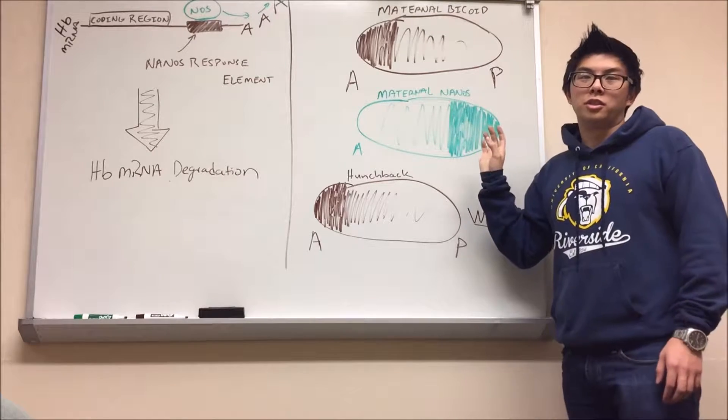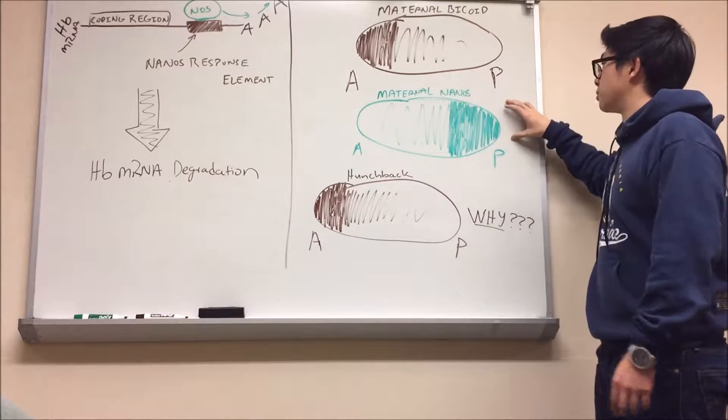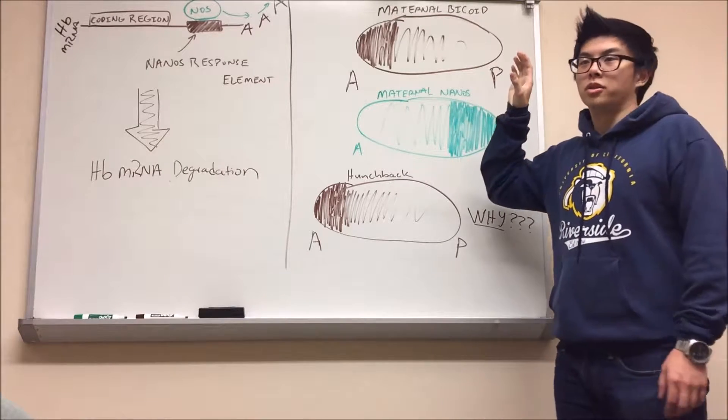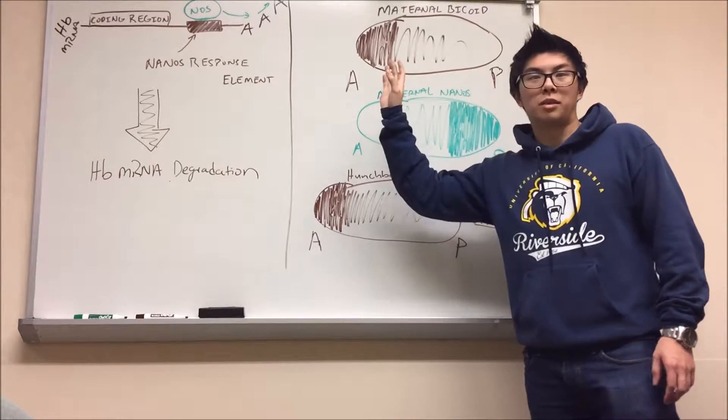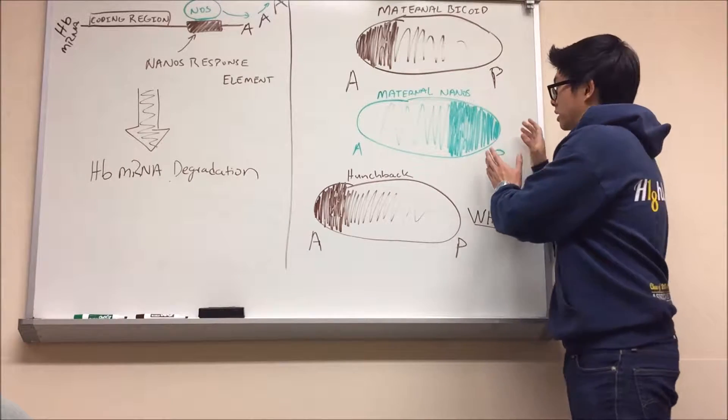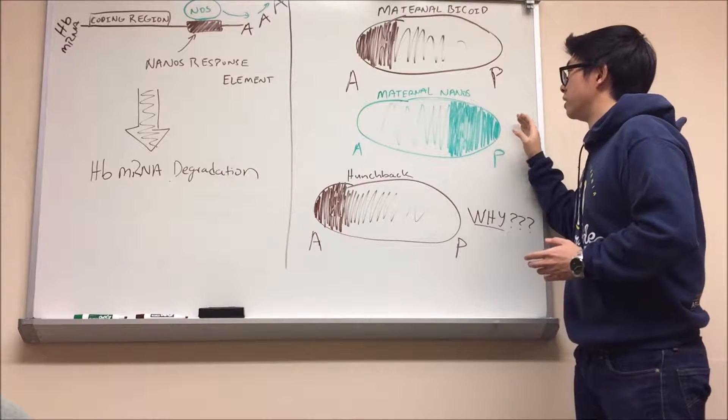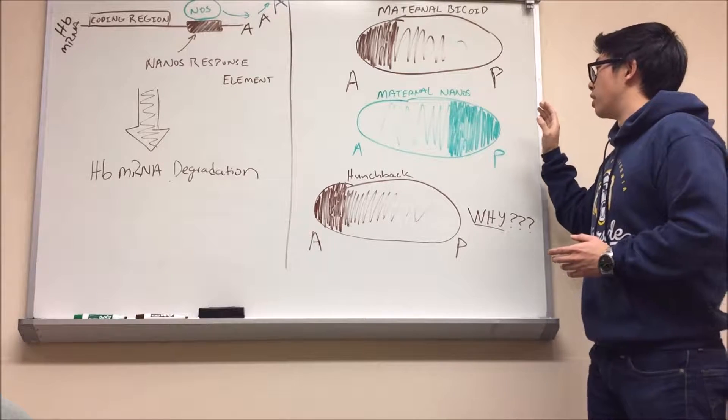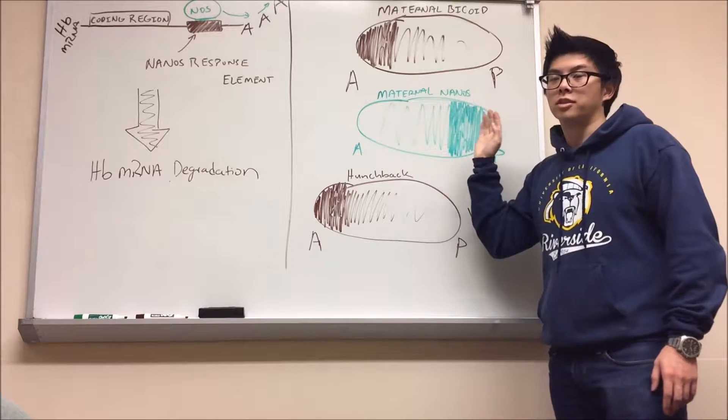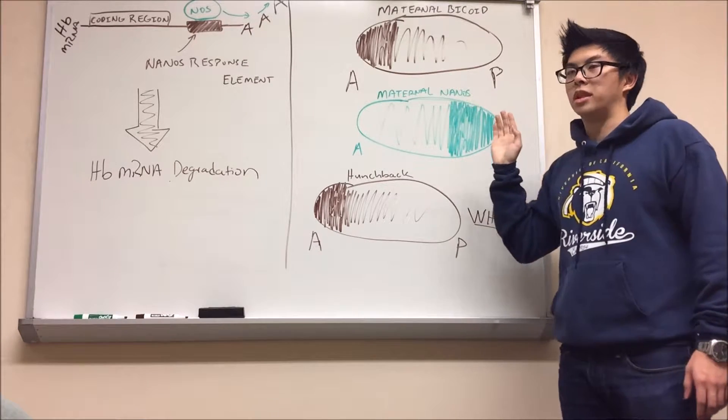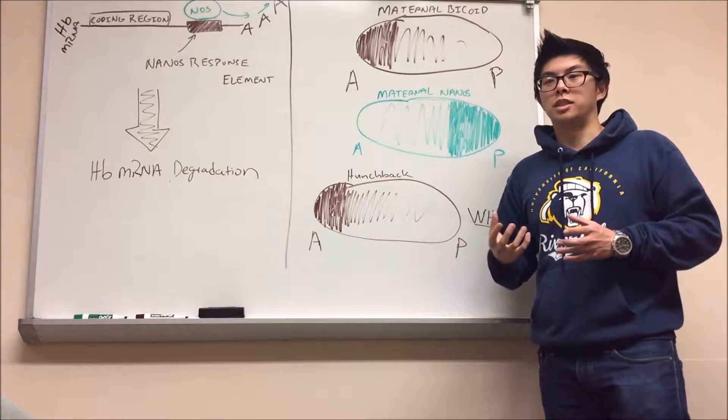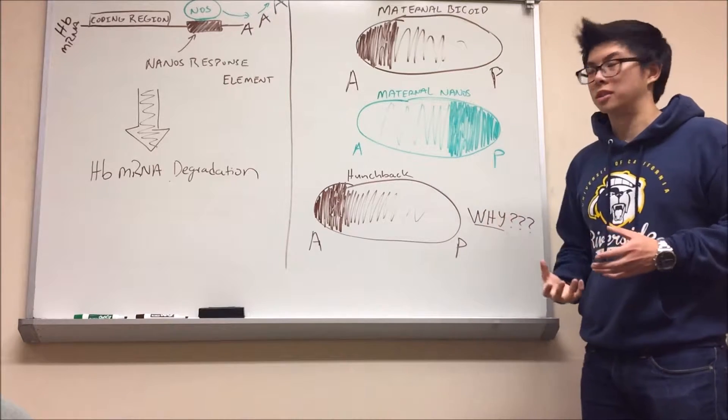There are also posterior-determined morphogens such as this one in green, Nanos. In Nanos, instead of having the mother deposit these mRNAs in the anterior end like in Bicoid, you have the mother depositing Nanos mRNA at the posterior end. Where if you have mutations in Nanos or if Nanos is completely eliminated, you end up with embryos that are lacking a lot of these posterior structures such as the abdomen and other components of it.